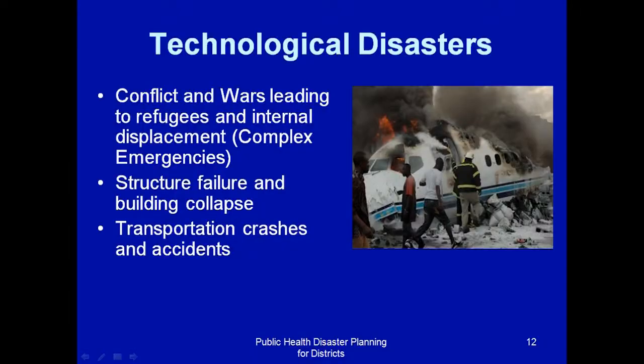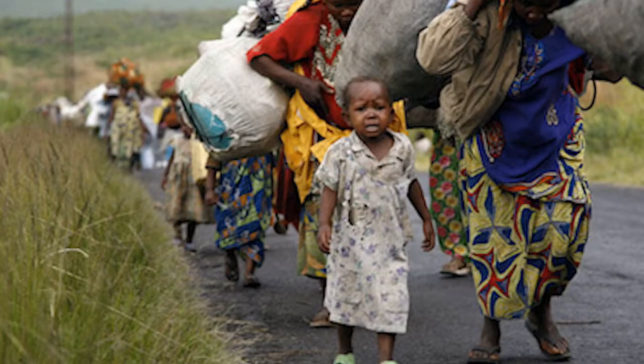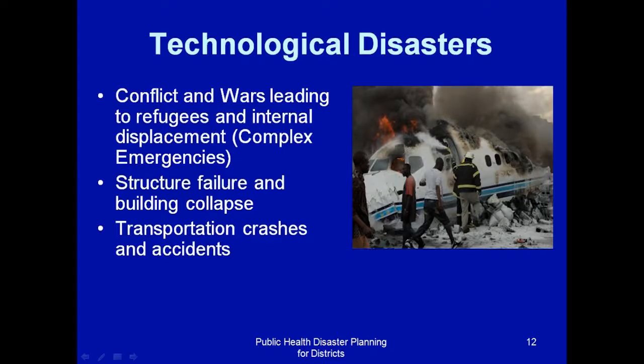When you come to technological disasters, as I said earlier, this is the result of either conflict and war. Conflict and war lead to refugees or internal displacement. People run away from their normal places and lose their livelihoods, and this causes what is termed complex emergencies.